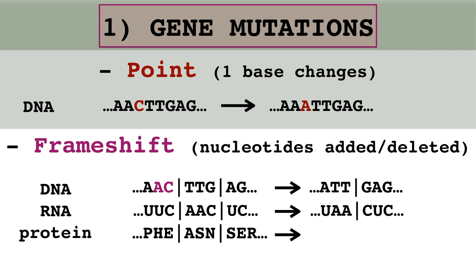On the other hand, frameshift mutation occurs when nucleotides are added or deleted from the sequence of a gene. In this case, the AC gets removed from the DNA sequence and will not be passed on to the RNA nor the protein sequence. The frameshift refers to the reading frame of three successive nucleotides within the RNA molecule, which gets translated to a particular amino acid from the protein. In this example, the removal of the two nucleotides changes the reading frame and creates a so-called stop codon, which prevents the production of a complete protein from the RNA.